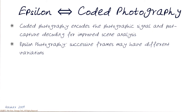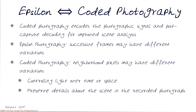Now, the space that goes from coded photography and epsilon photography could be merged because we can actually combine them to be able to generate normal forms of images too. One thing to note about coded photography is that each image we capture would basically mean that the neighboring pixels may have different variations.